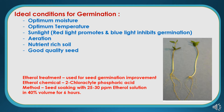Ideal conditions for germination refer to the ambient conditions that favor germination, such as optimum moisture, optimum temperature, and sunlight. As far as sunlight is concerned, red light promotes germination and blue light inhibits germination. After that, proper aeration and nutrient-rich soil will increase germination speed. Good quality seed is also an important factor — seed having good vigor, optimum moisture, well dried, harvested at the correct time, and having good physiological maturity will give optimum germination.